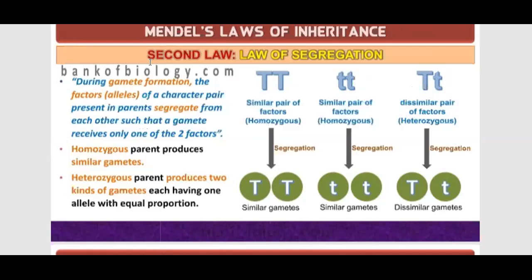During gamete formation, the factors of a character pair in parents segregate from each other in a gamete. It means that when they make a zygote, they meet. But when they make gametes, they segregate. Homozygous parents produce similar gametes, while heterozygous parents produce two kinds of gametes, each having one allele with equal proportion.